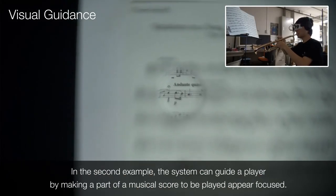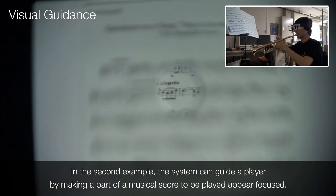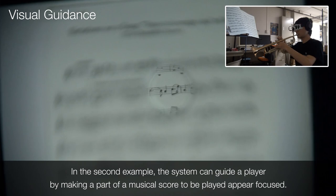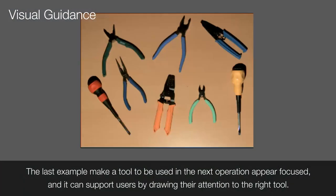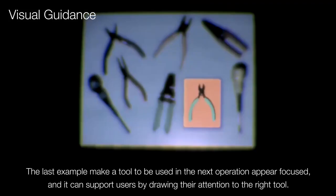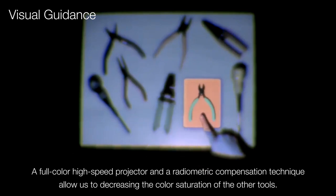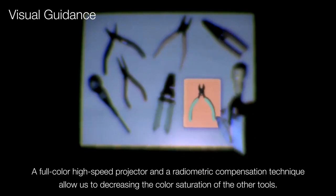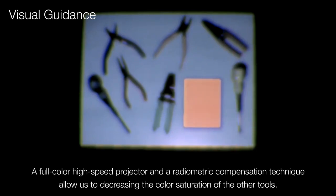In the second example, the system can guide a player by making a part of a musical score to be played appear focused. The last example makes a tool to be used in the next operation appear focused, supporting users by drawing their attention to the right tool. A full-color high-speed projector and a radiometric compensation technique allow us to decrease the color saturation of the other tools.